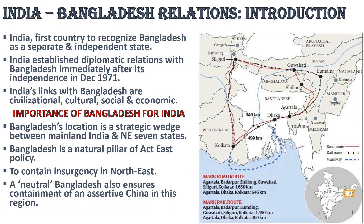But the assassination of Sheikh Mujibur Rahman, followed by military dictatorship, and in the 1980s Bangladesh's emphasis on Islam, created tensions between the two countries. Bangladesh is quite important for India — its location is a strategic block between mainland India and the northeastern seven states. Each of the northeastern states is landlocked and has a shorter route to the sea through Bangladesh. The nearest port for the northeast is Kolkata, which is 1,500 km from Aizawl and Agartala. The problem is not only the distance, but also the route, which passes through multiple states and mountains.